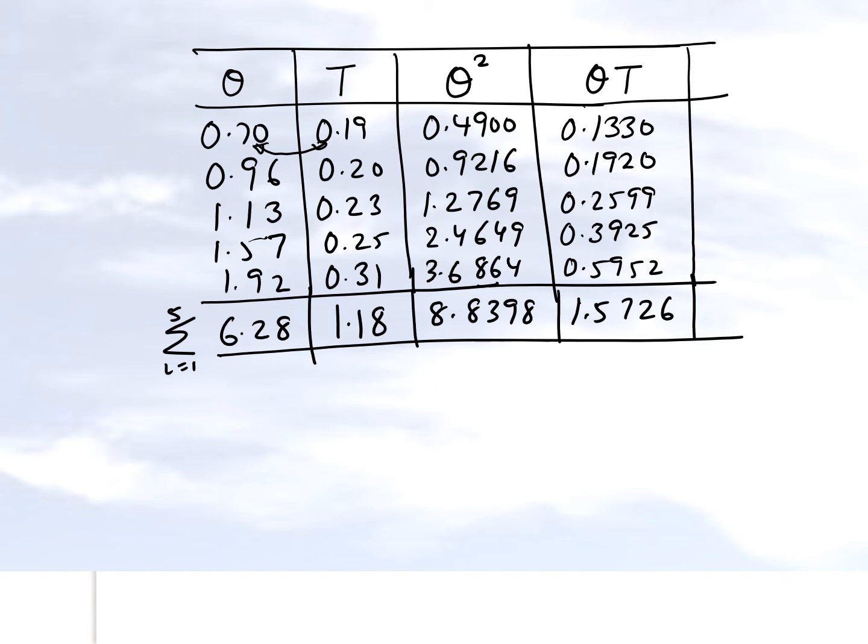So having said that, let's write what we have here as the value of k2. So k2 is n summation, n is 5 in our case because we have five data points. So the summation of the theta i and t sub i values minus the summation of the five values of theta, the summation values of the torque.